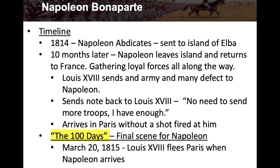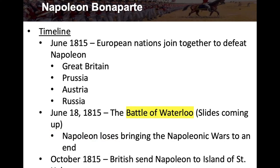This phase is called the 100 Days — the final scene for Napoleon. On March 20th, 1815, Louis the 18th flees Paris when Napoleon arrives. In June 1815, European nations join together to defeat Napoleon. An alliance forms between Great Britain, Prussia, Austria, and Russia. On June 18th, 1815 is the Battle of Waterloo — we'll have some slides on that very famous battle.